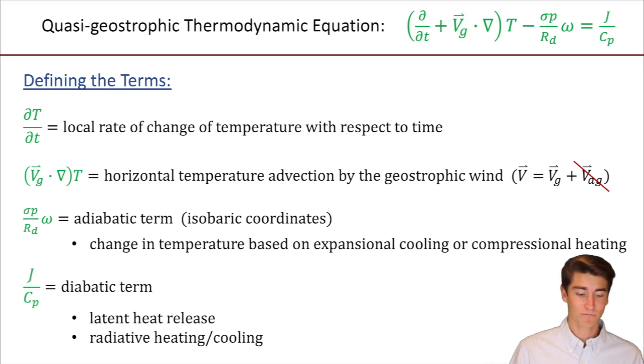And the last term, J over cp, that's our diabatic term, latent heat release, radiative heating and cooling. Again, means the same thing.